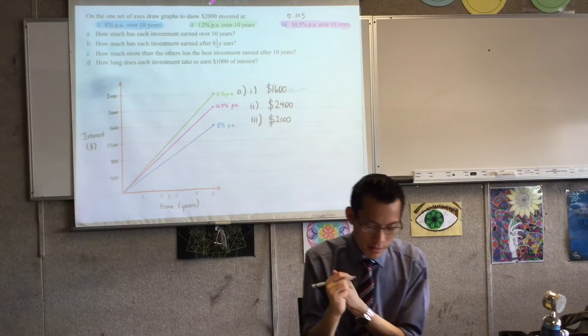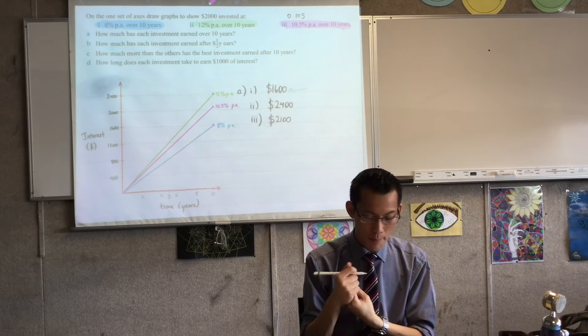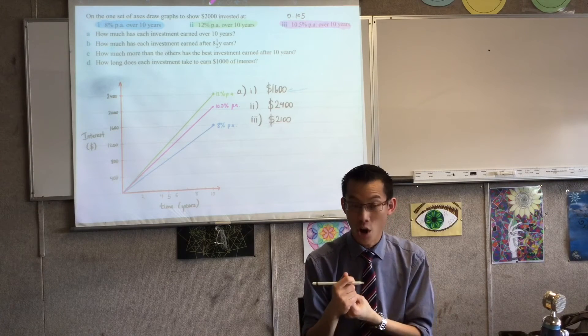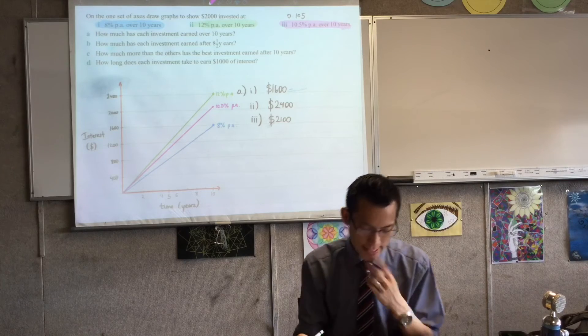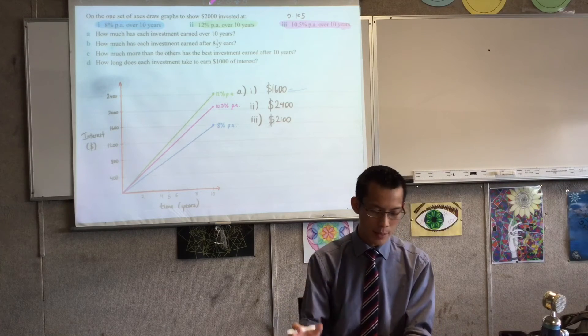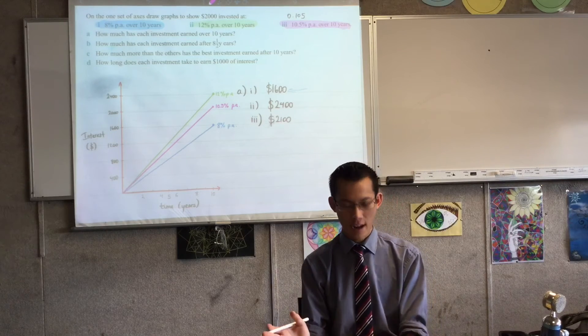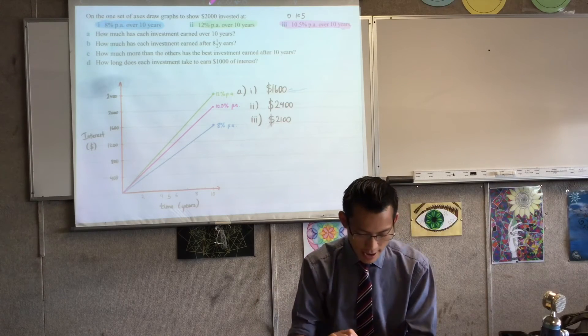Excellent. So I've done the first thing, I've drawn the graphs. I've also done part A, I've worked out how much investment earned over 10 years. Now, when you have a look at this next bit, how much is each investment earned after eight and a half years? I'm going to use my graph, right?